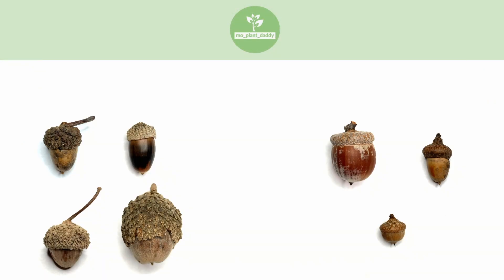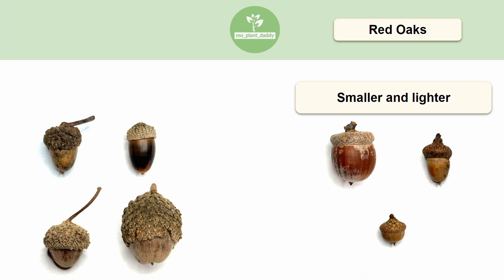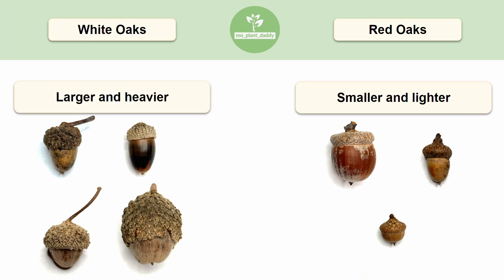To kick things off, let's separate our acorns into two groups. First we have our red oaks, which are generally smaller and lighter acorns, then we have white oaks, which are larger and have heavier acorns.